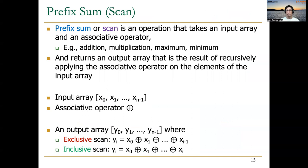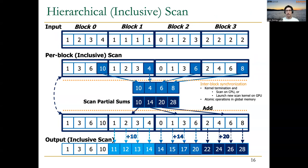In the previous lecture, we talked about prefix sum, an operation where we take an input and an associative operator and calculate the elements of the output by recursively applying the associative operator on the elements of the input array. Remember that there is exclusive scan and inclusive scan. We discussed how to implement a hierarchical inclusive scan that can be adapted to a system where we have two or more levels of parallelism — for example, in GPUs where we have thread blocks, warps, and threads. The first thing we would do is partitioning the input over the thread blocks, and each thread block does a per-block scan, using warps and individual threads inside.